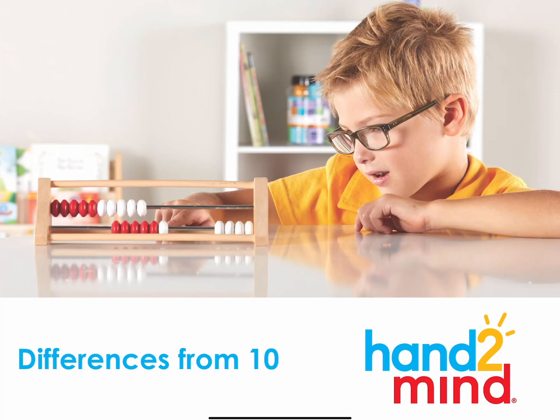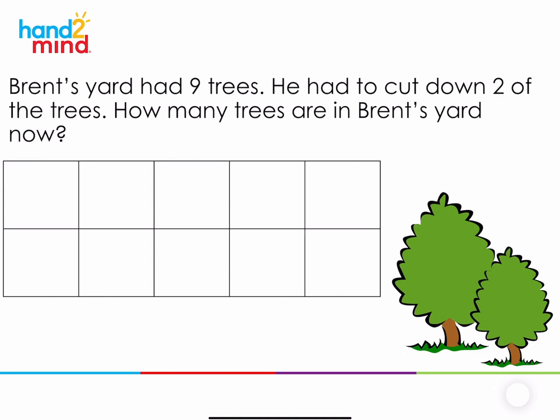Today we're going to begin by looking at a story. You can follow along with me or read out loud as I read it. Brent's yard had nine trees. He had to cut down two of the trees. How many trees are in Brent's yard now? As a mathematician, we always want to start by making sure we understand the problem. Who or what is this problem about? It's about Brent and these trees. What do we want to know? We want to know how many trees he has in his yard now. What information were we given? We know that he had nine trees and he cut down two of them.